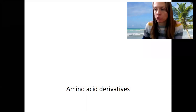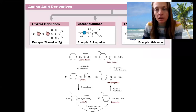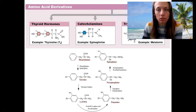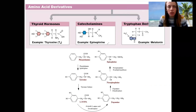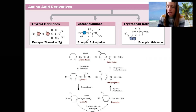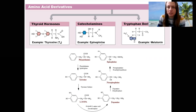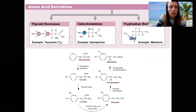Amino acid derivatives — I already covered the basic idea. Here's another look at their different types. We will look at these three types in different detail. They're all derived from amino acids.